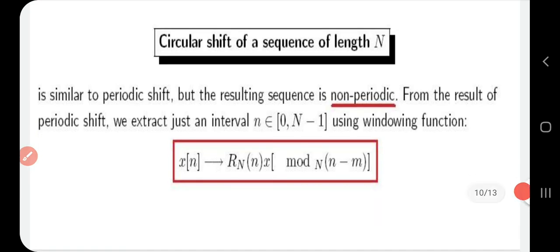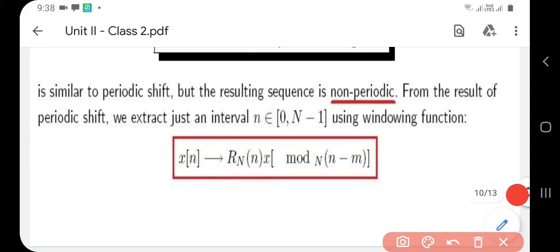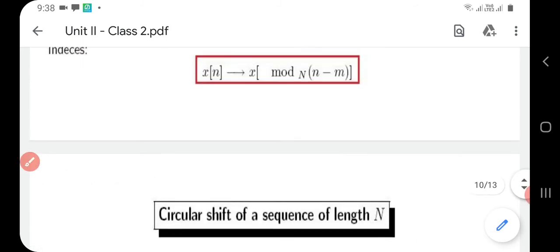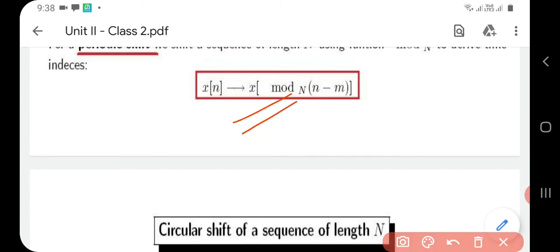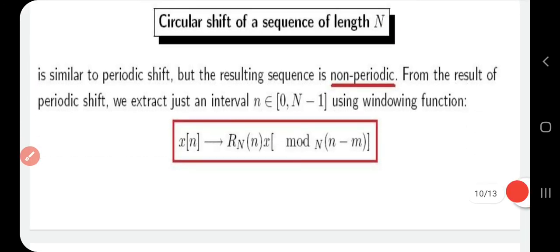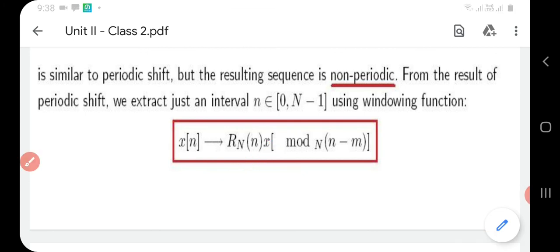Circular shift is similar to periodic shift, but the resulting sequence is non-periodic. In periodic shift the resulting sequence is periodic, whereas in circular shift the resulting sequence is non-periodic. In circular shift we introduce a windowing function R_N instead of the modulo function. So in periodic shift the result is periodic and we use modulo, whereas in circular shift the result is non-periodic and we use the windowing function R_N.